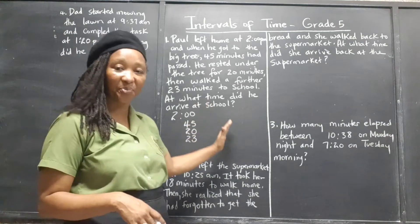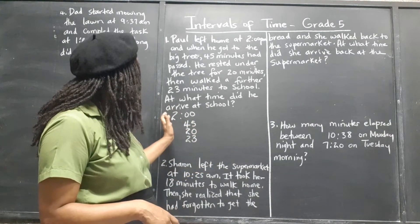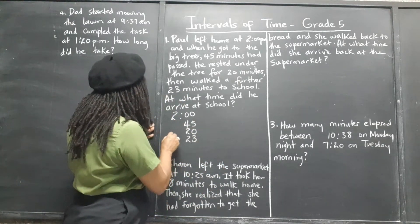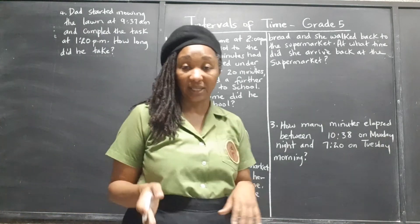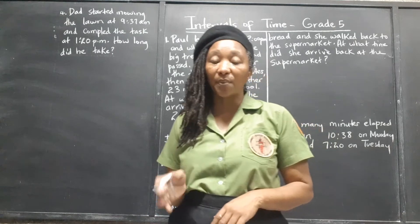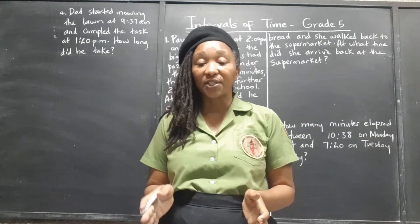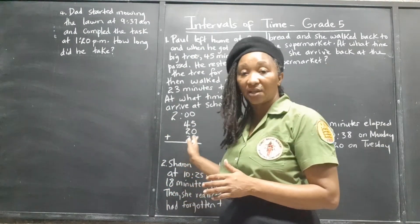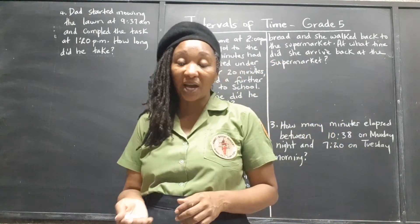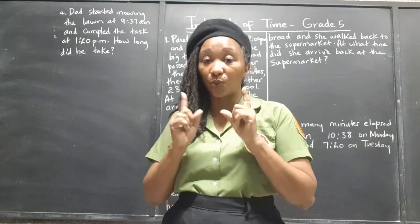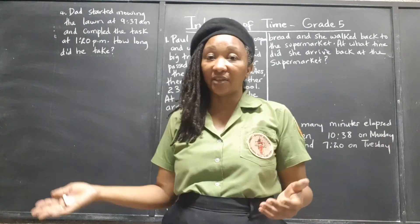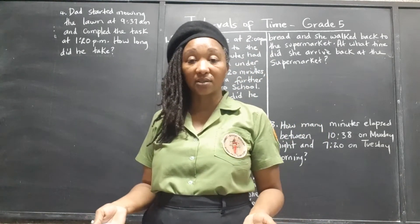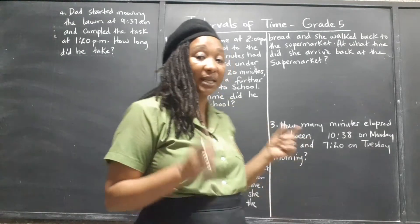We're going to add all those minutes together. You could do it separately — add the 45 to the 2 hours, then the 20 minutes, then the 23. But the important thing to remember when adding minutes and hours: 60 minutes make 1 hour. Once we pass 59 minutes, we can no longer leave it under the minutes; we have to transfer it to hours. Once it touches 60, that's 1 full hour. If we get 120, that's 2 full hours; 180, 3 full hours.